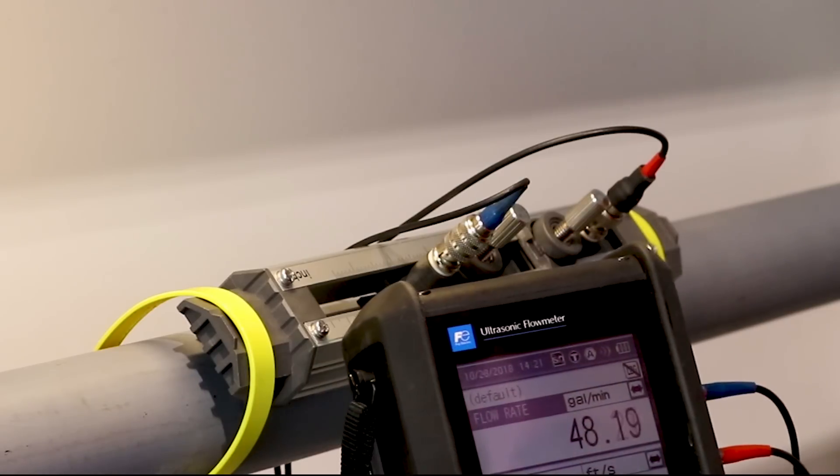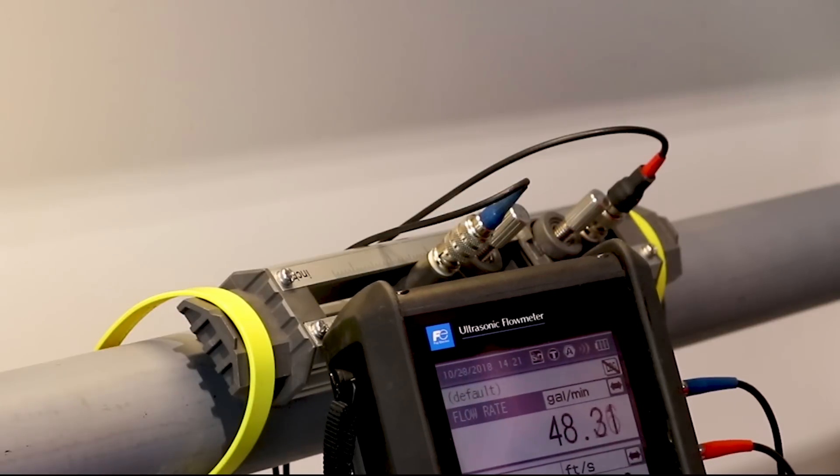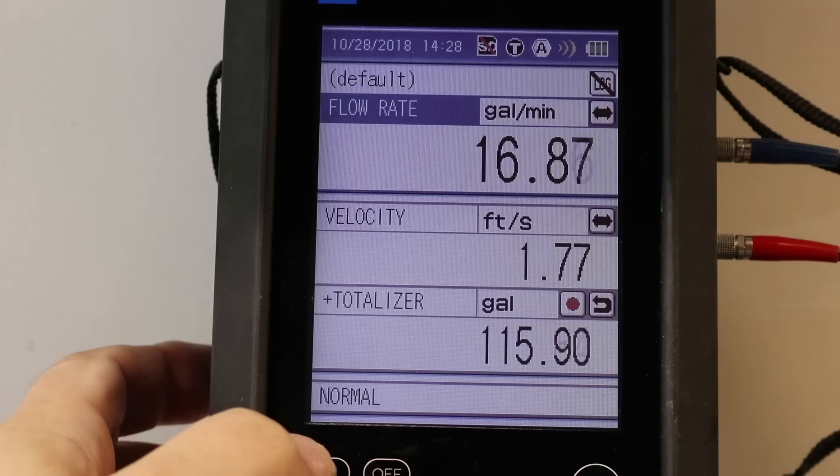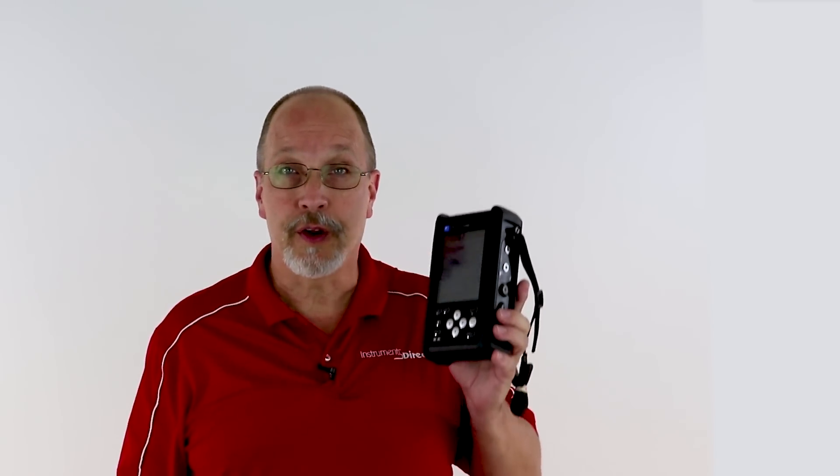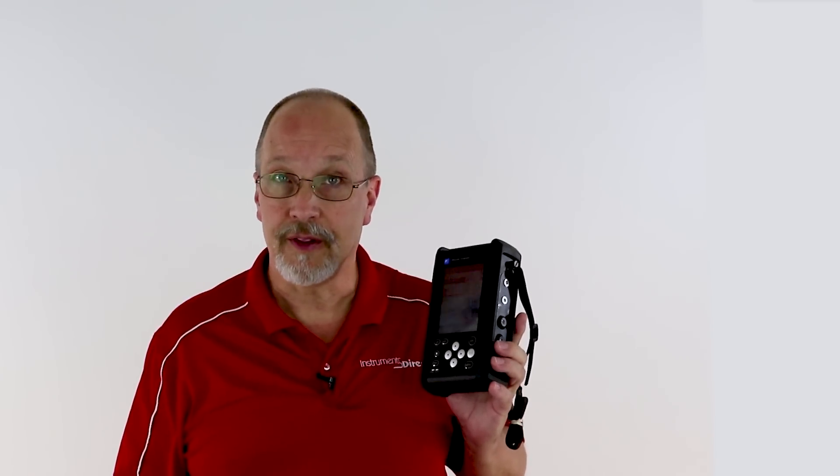Now you can read the flow. The display is a GUI interface, so you can move things around. We ship it with the top line indicating flow rate in GPM, or any other engine unit you prefer. The second line is velocity, and the third line is total flow, and it also has a reset button. And now you're reading flow. As you can see, it's pretty easy to install your Fuji Portaflow ultrasonic flow meter.